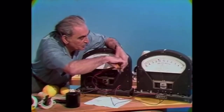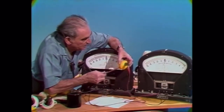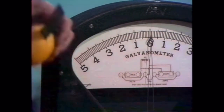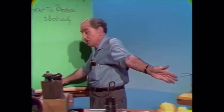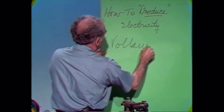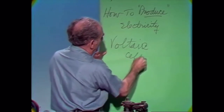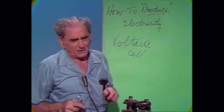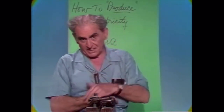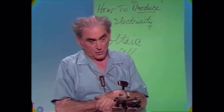Now I am going to exchange the polarity. Watch it now — direction the other way. So this that I have here, an acid solution and two different metals, we call a voltaic cell — V-O-L-T-A-I-C — named after that wonderful Italian Alessandro Volta of Como, Italy, who is commemorated in Como with a temple to Alessandro Volta.